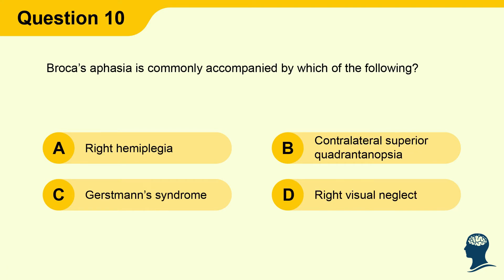Question 10: Broca's aphasia is commonly accompanied by which of the following? A) Right hemiplegia, B) Contralateral superior quadrantanopsia, C) Gerstmann's syndrome, D) Right visual neglect.